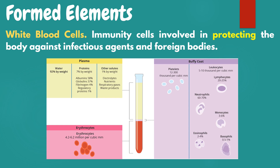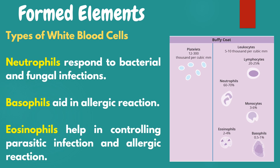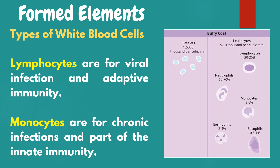Another formed element is white blood cells — immunity cells involved in protecting the body against infectious agents and foreign bodies. The types of white blood cells include: neutrophils, which respond to bacterial and fungal infections; basophils, which aid in allergic reactions; eosinophils, which help control parasitic infections and allergic reactions; lymphocytes, for viral infections and adaptive immunity; and monocytes, for chronic infections and part of innate immunity.